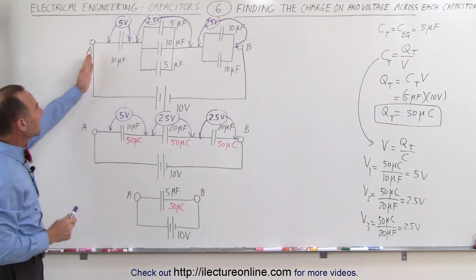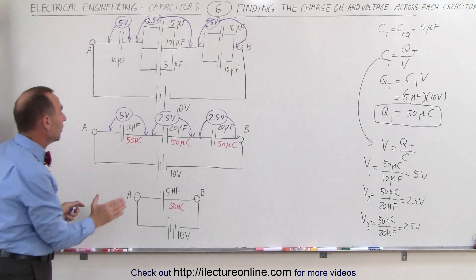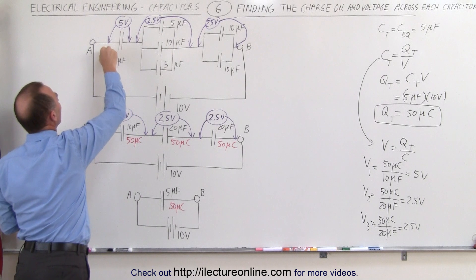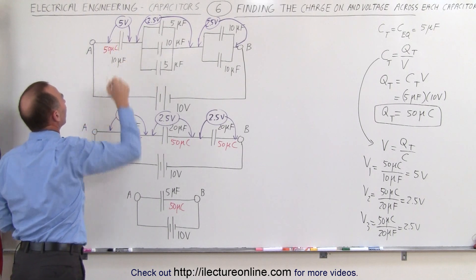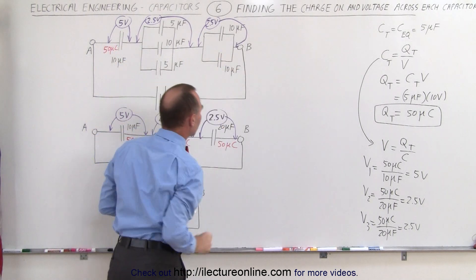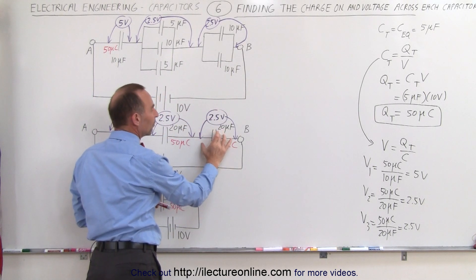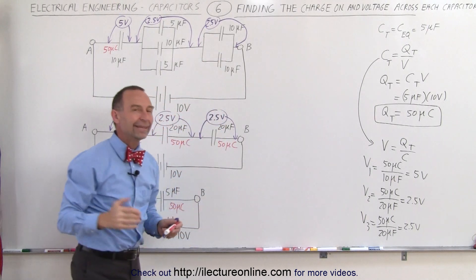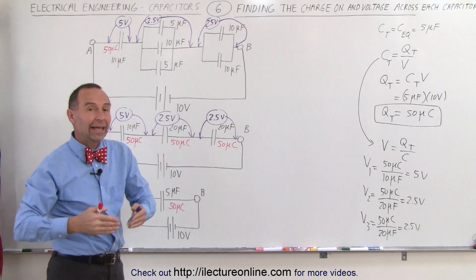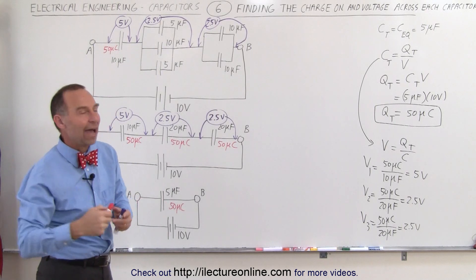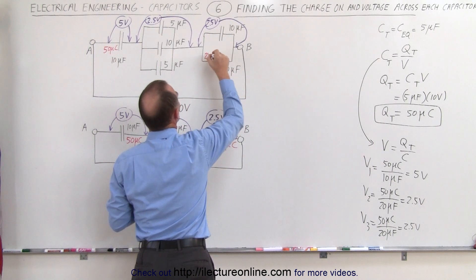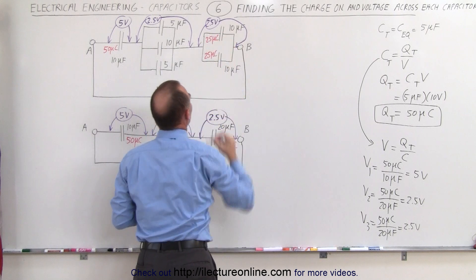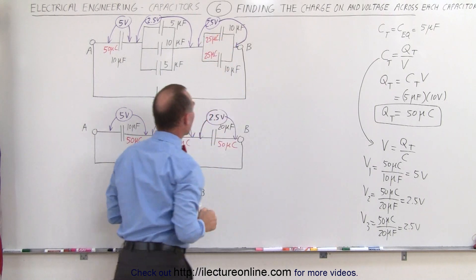What about the charge on each capacitor? For the first one, it's the same as before — 50 microcoulombs. For the last group, the equivalent capacitor carries 50 microcoulombs but represents two equal capacitors in parallel. Since they're equal in size and in parallel, each carries half the charge: 25 microcoulombs each, which adds up to 50 microcoulombs.